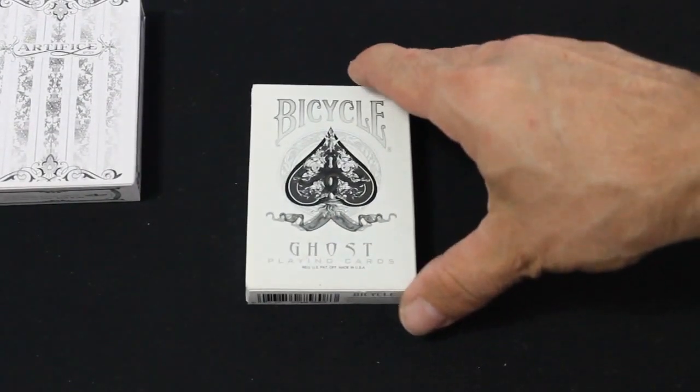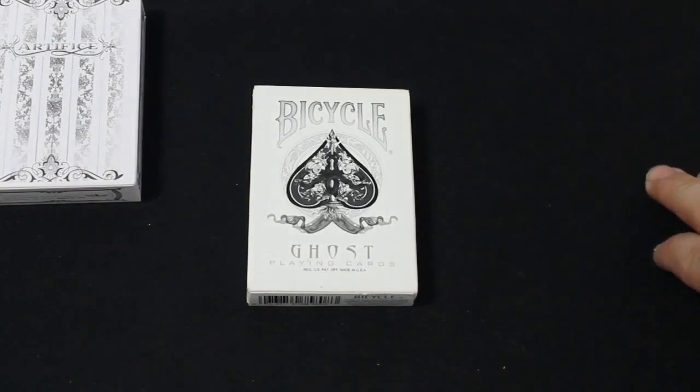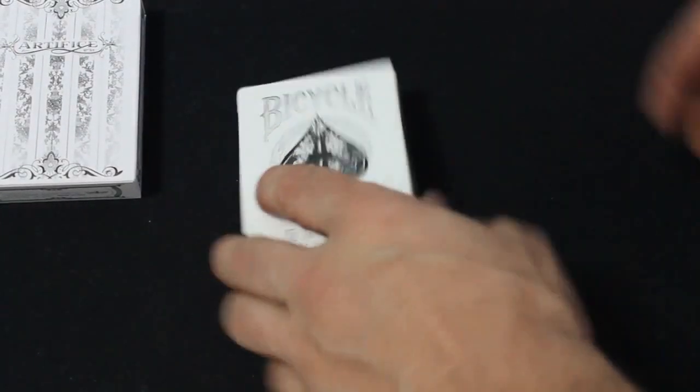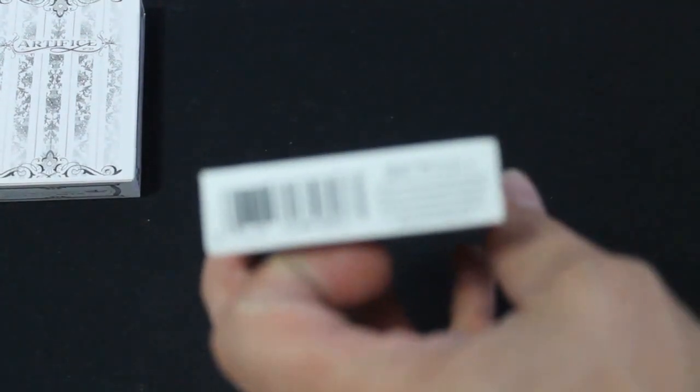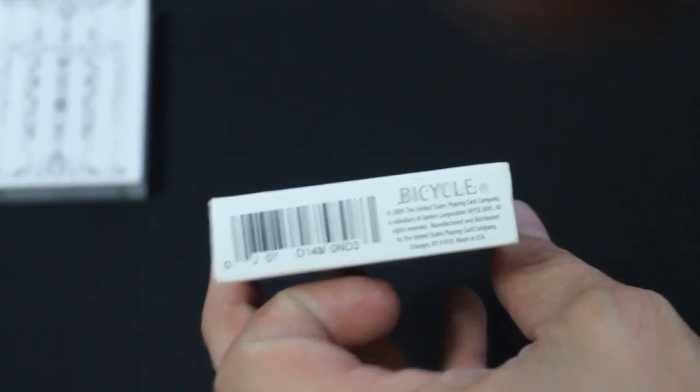Let's get right into it. Let's start off with the Bicycle one. Obviously Bicycle Ghost got the nice spade tip on there, just a white rider back, white seal. Exactly Queen of Hearts reveal on top and a Jack of Diamonds reveal on the barcode, which is fairly standard on a lot of the older Ellusionist decks and other similar decks.